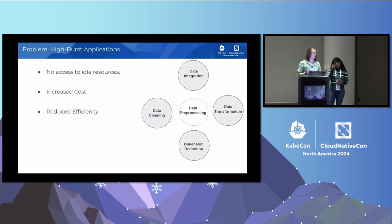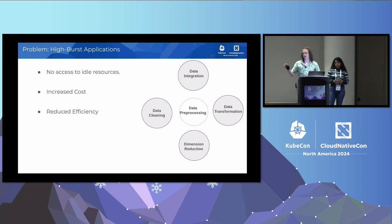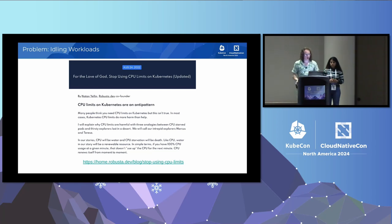Another similar example is high-burst applications — imagine a data processing pod with different functions passing information back and forth. They're going to use different amounts of memory and spike at different times, because you're doing transformation at a different time than cleaning. When allocating resources with requests and limits, you need to set each container to its maximum amount to avoid being killed or throttled, but you can't account for how they idle differently. You end up over-allocating, with periods of wasted resources. There's even common wisdom that says don't use CPU limits, because if a container doesn't use all its CPU, that CPU is wasted — the kernel won't use it for anything else.